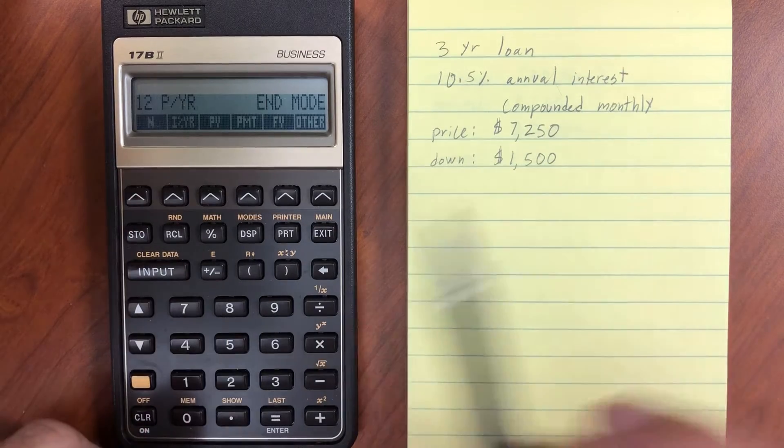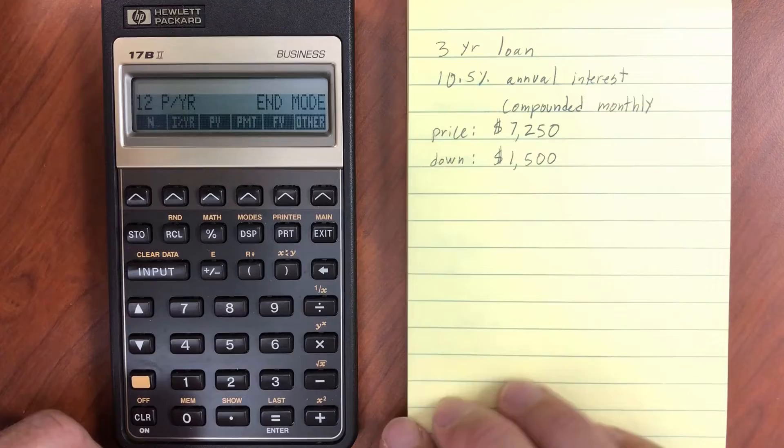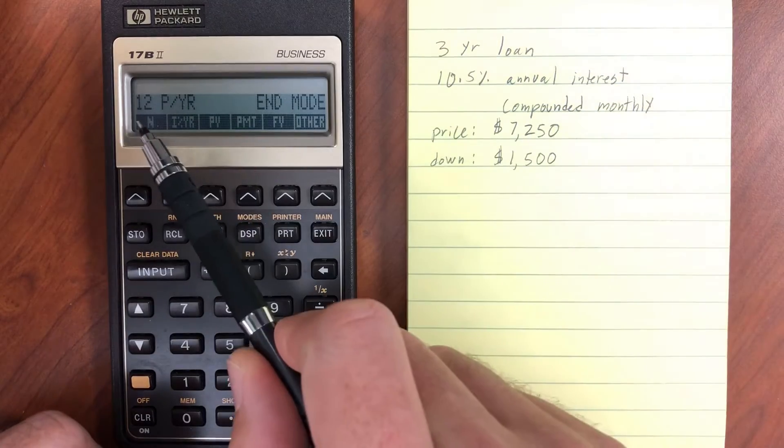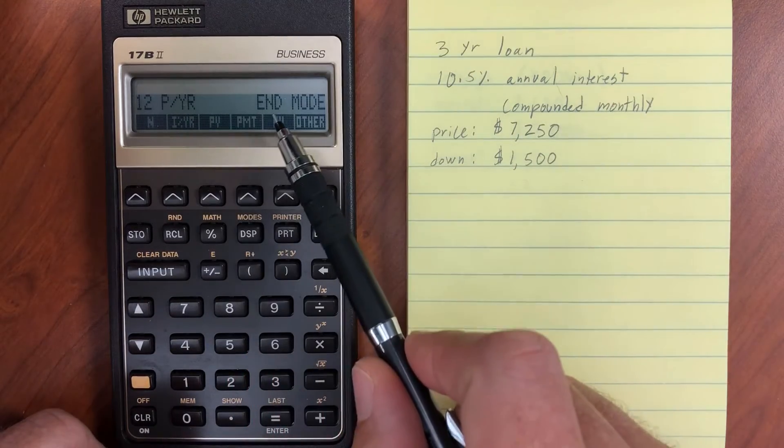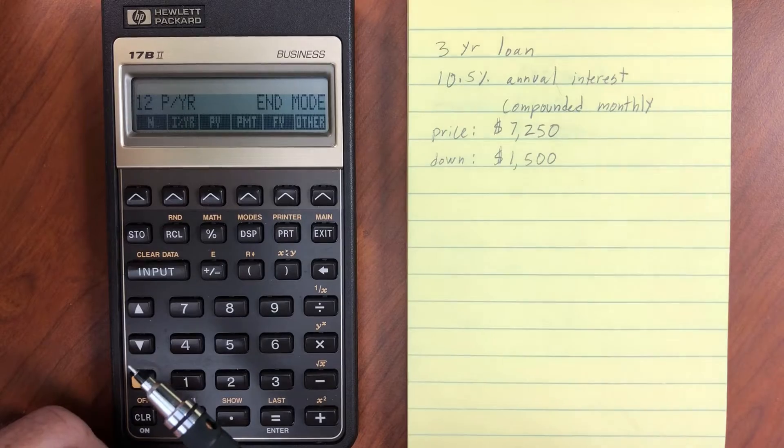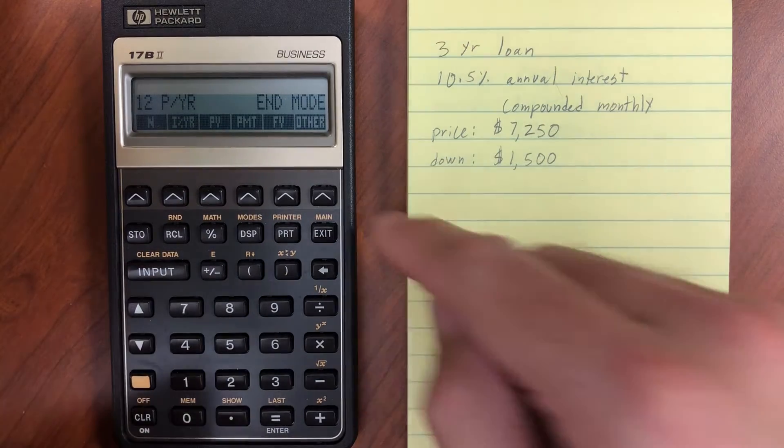Time value of money is what we'll be focusing on in this video. So right now I've got it set to 12 payments per year, and end is the mode. That means the payments come at the end of the period as opposed to the beginning.